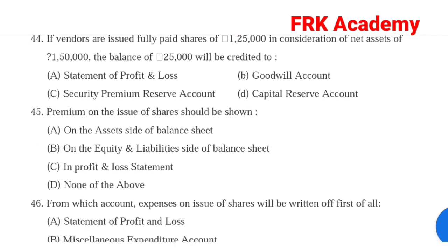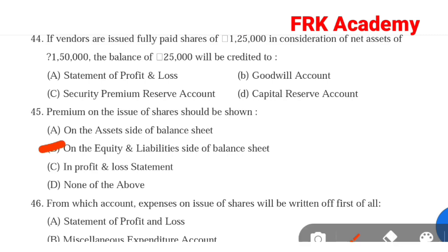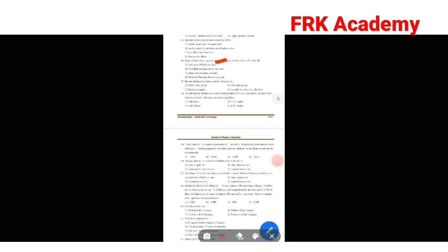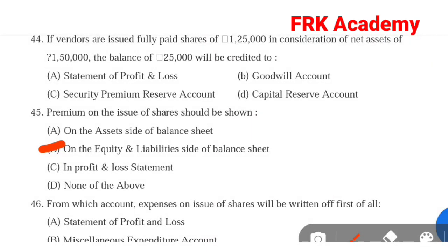Question 45: Premium on the issue of shares should be shown. Option A: on the asset side of balance sheet. Option B: on the equity and liability side of balance sheet. Option C: in profit and loss statement. Option D: none of the above. Answer: Option B, on the equity and liability side of the balance sheet.